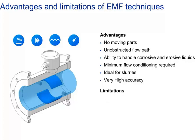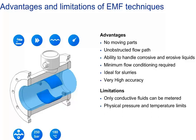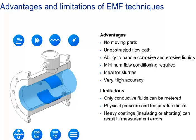Limitations include: only conductive fluids can be metered — minimum conductivity, depending on the meter design, is 5 to 20 micro Siemens per centimeter. Physical pressure and temperature limits apply: maximum pressure depending on the diameter is limited to 250 bar, and maximum temperature is limited to 180 degrees C. Heavy coatings, whether insulating or shorting, can result in measurement errors, e.g. water with high fat content.